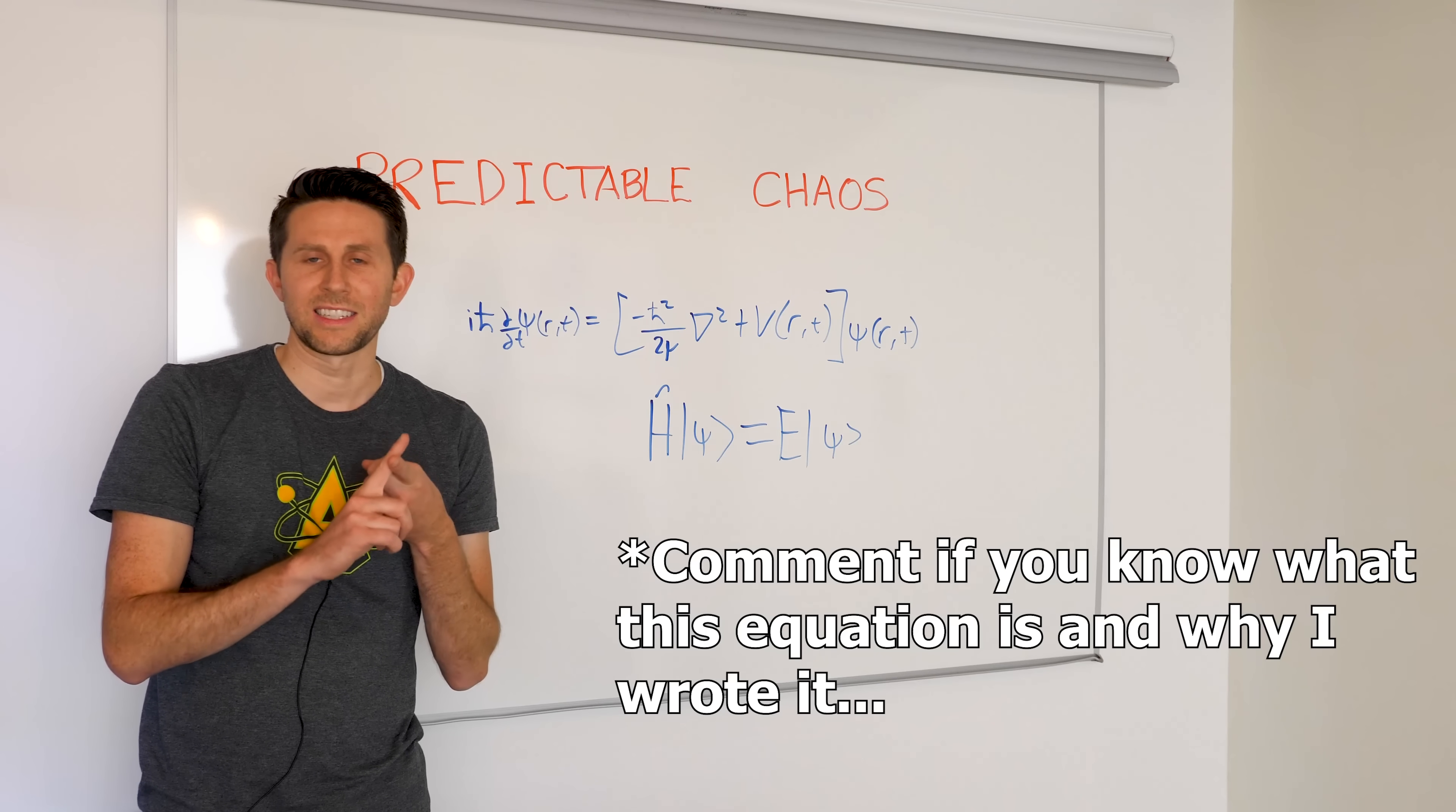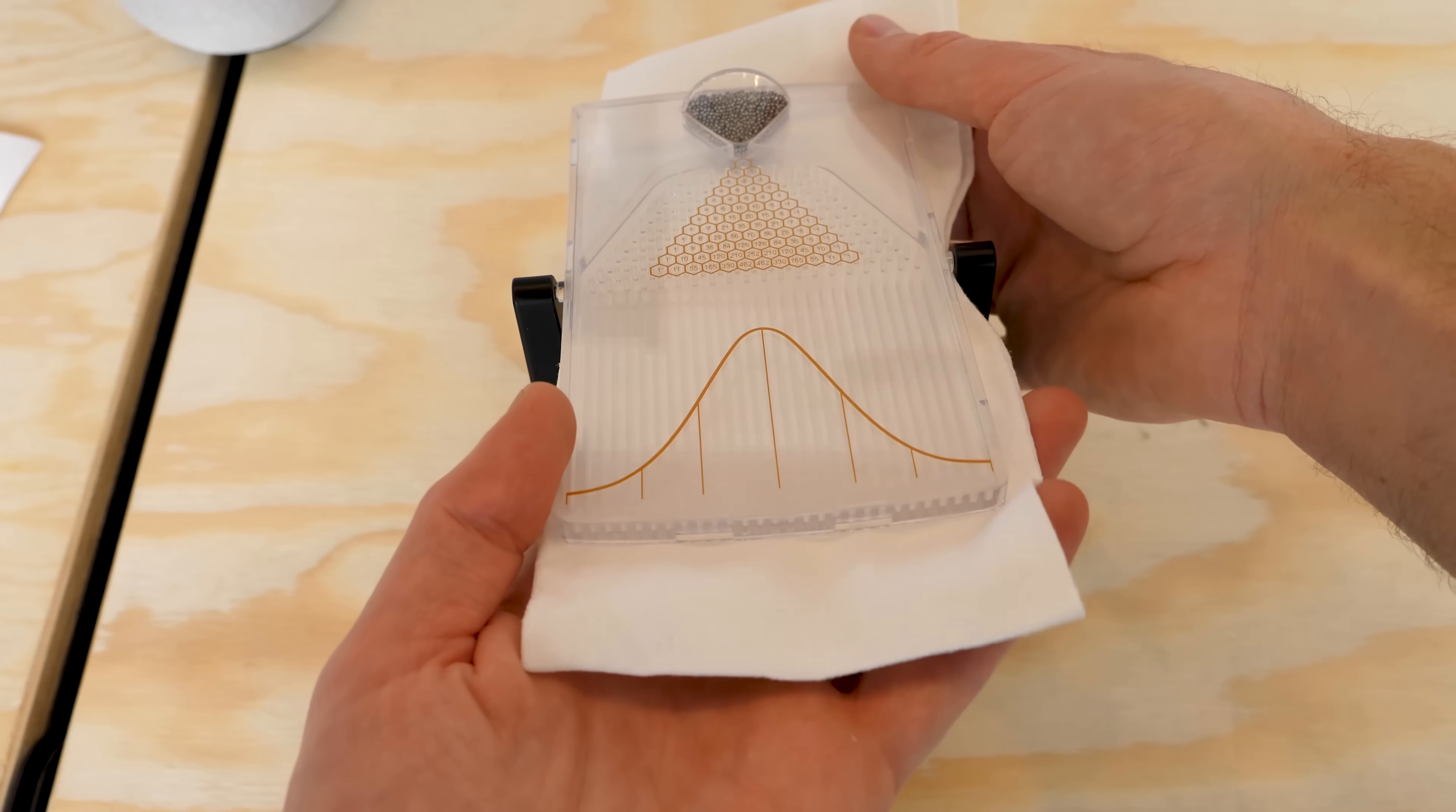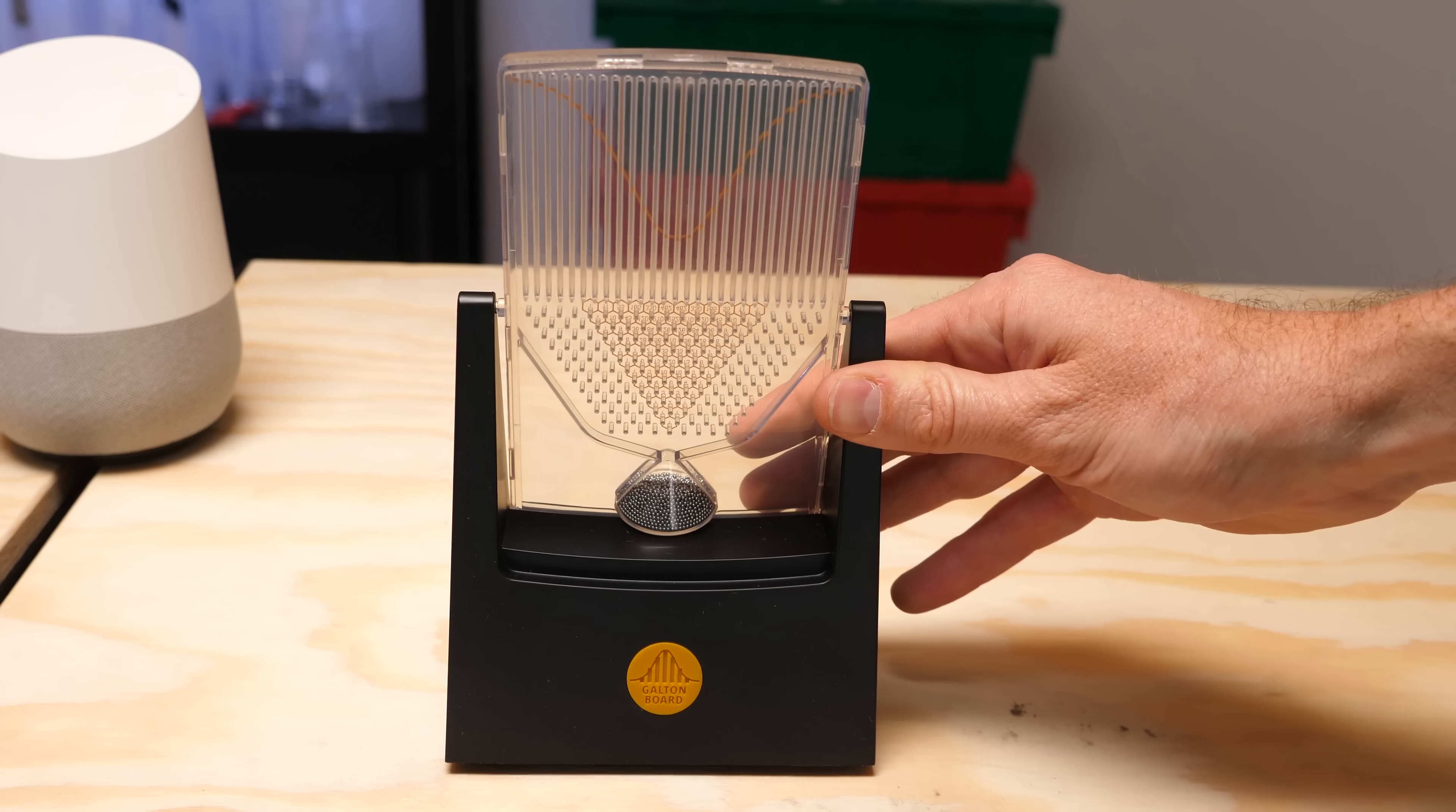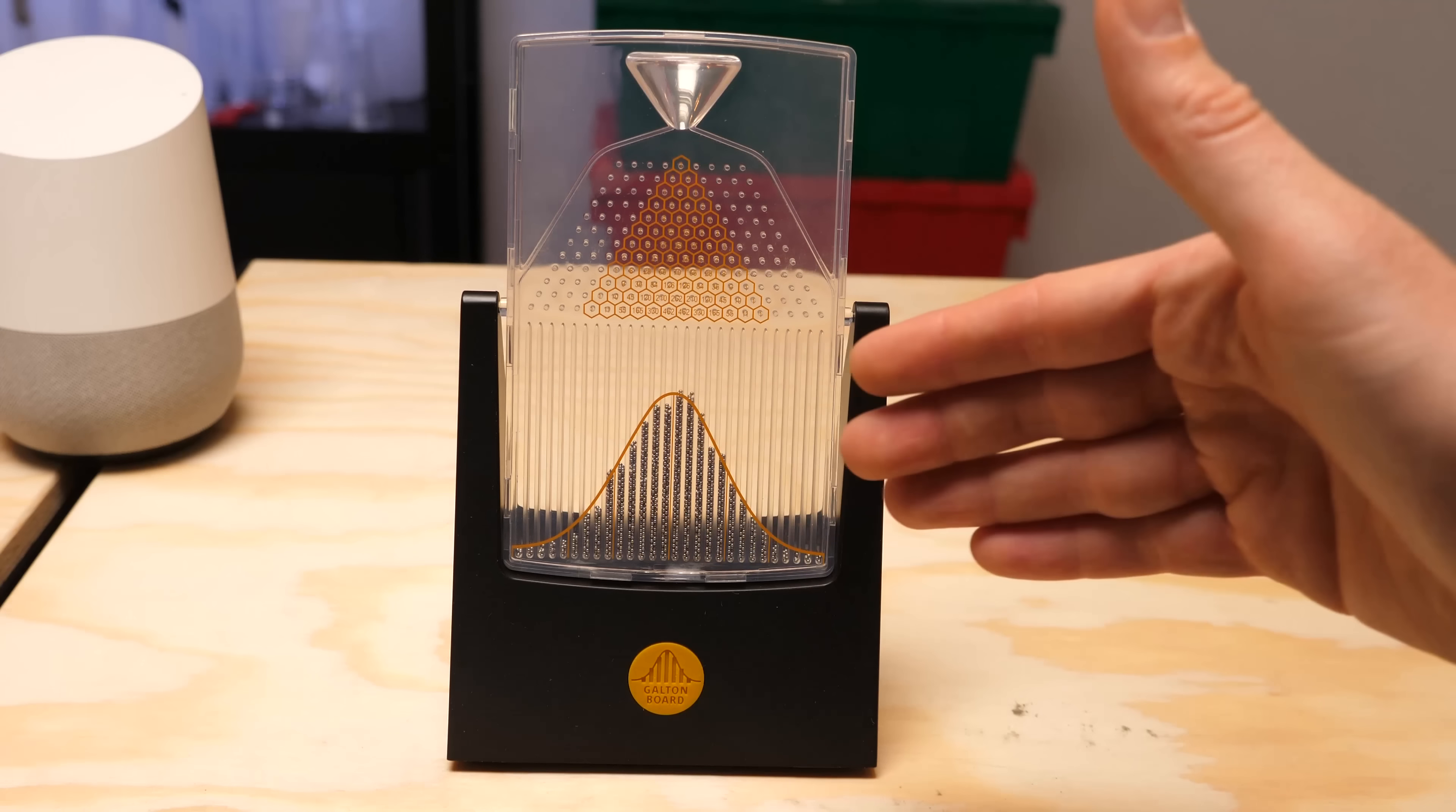But actually for chaotic systems and random systems, you can still use statistics to predict what you think will happen on a large grand scale. Let me show you what I mean. One example of a chaotic system is one like this. So I have some metal beads up here and as they fall down, they hit these little pegs. But when you drop a lot of balls, it becomes easier to predict where the average ball will land.